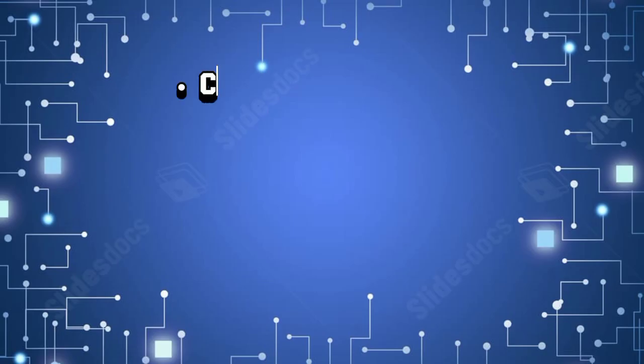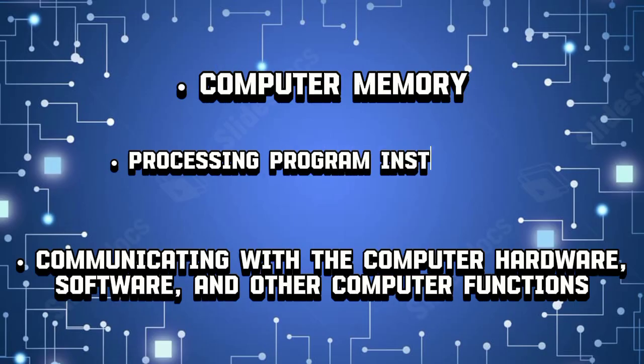Operating system is one type of system software which contains instructions that coordinate all activities of the computer and hardware devices, and allows functions such as transferring data between input devices including computer memory, processing program instructions, communicating with the computer hardware, software, and other computer functions. There are different operating systems.